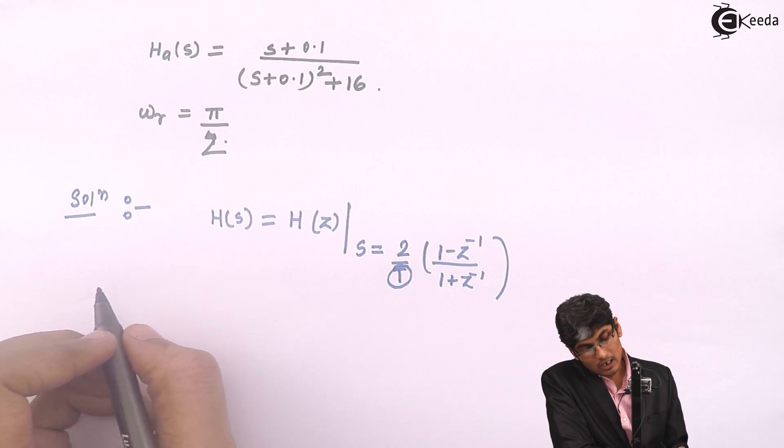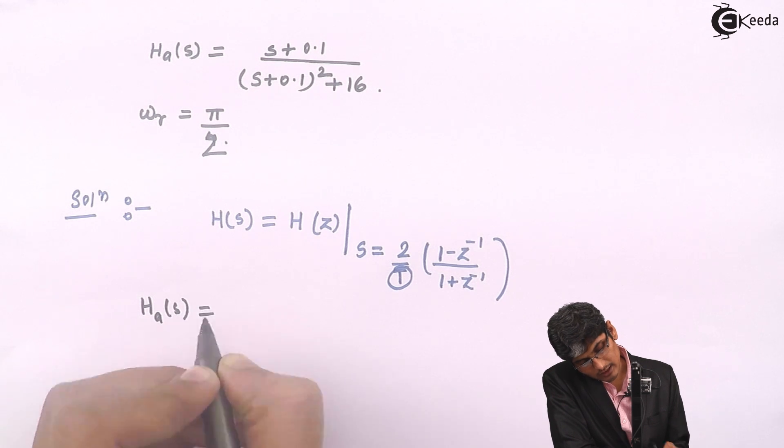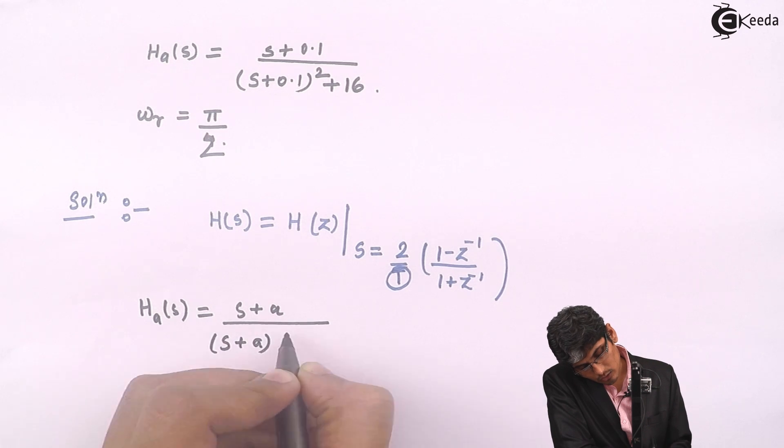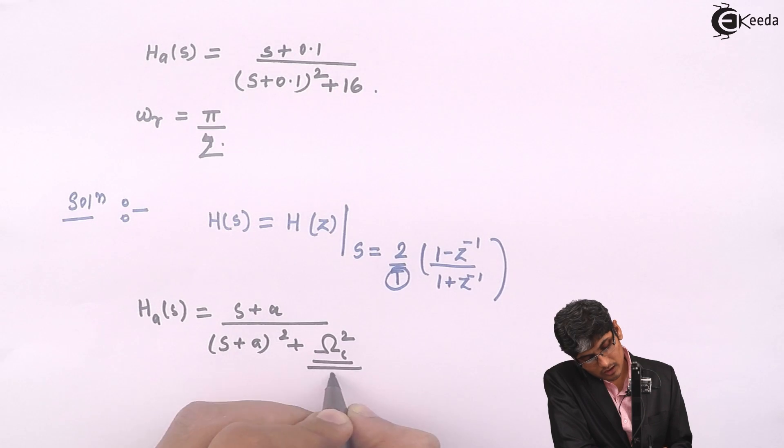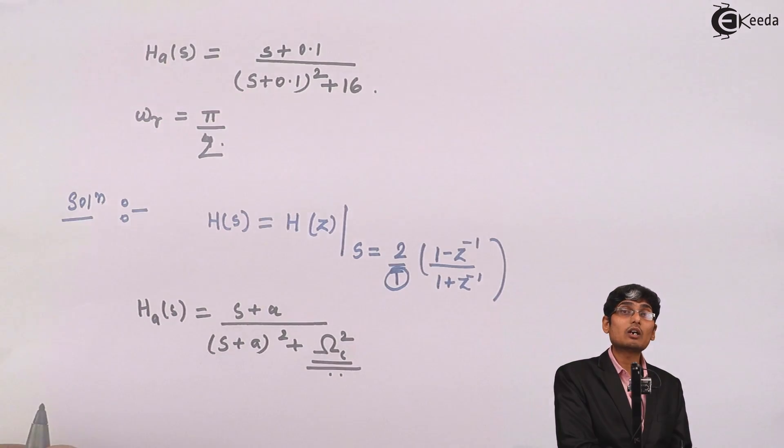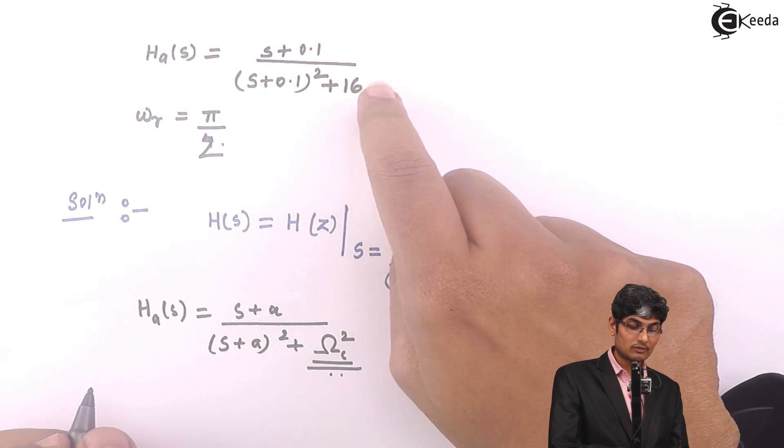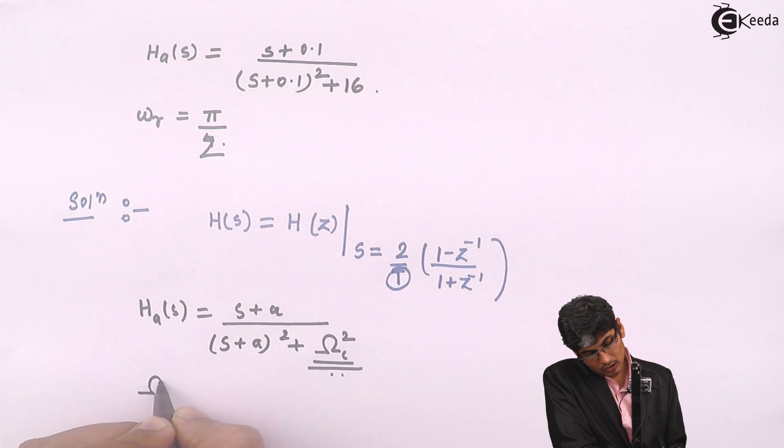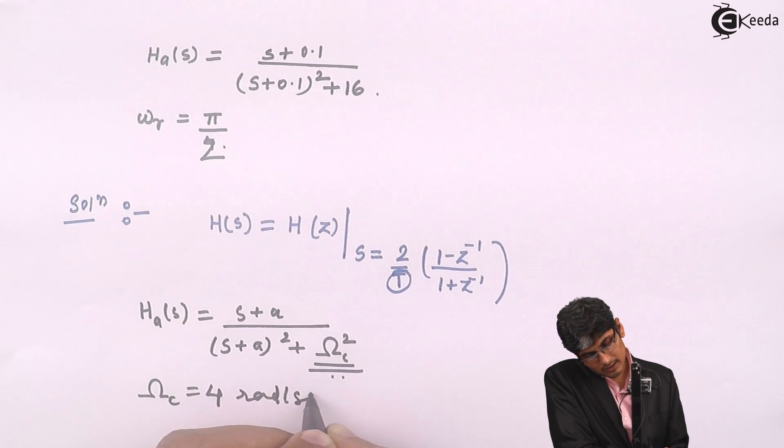In general, a transfer function of analog filter is written as S plus A upon S plus A the whole square plus omega C square. So this term actually gives you the cutoff frequency. So this term is responsible for to give us a cutoff frequency.